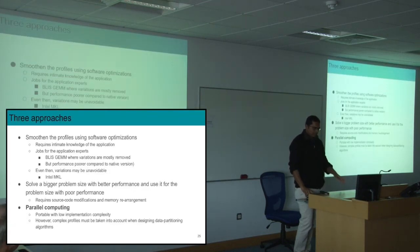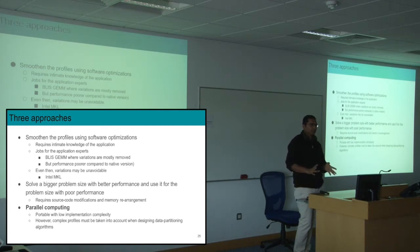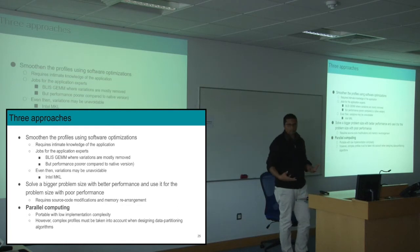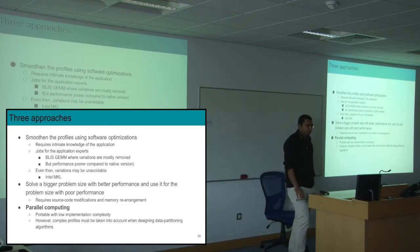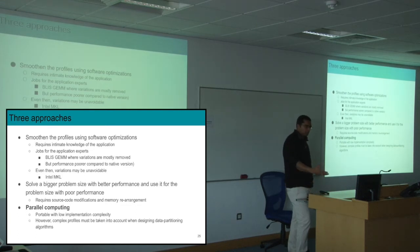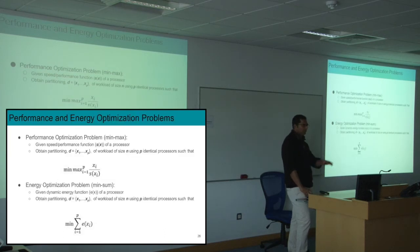Given such a profile, there are three approaches to optimize your application. One is to smooth the profiles, but even experts can't do that. Another is to solve a bigger problem size and use it for a smaller problem size, but that requires source code modifications and memory rearrangement. The third is a parallel computing solution, which is what we designed: it gives you a heterogeneous workload distribution — a load imbalancing distribution.